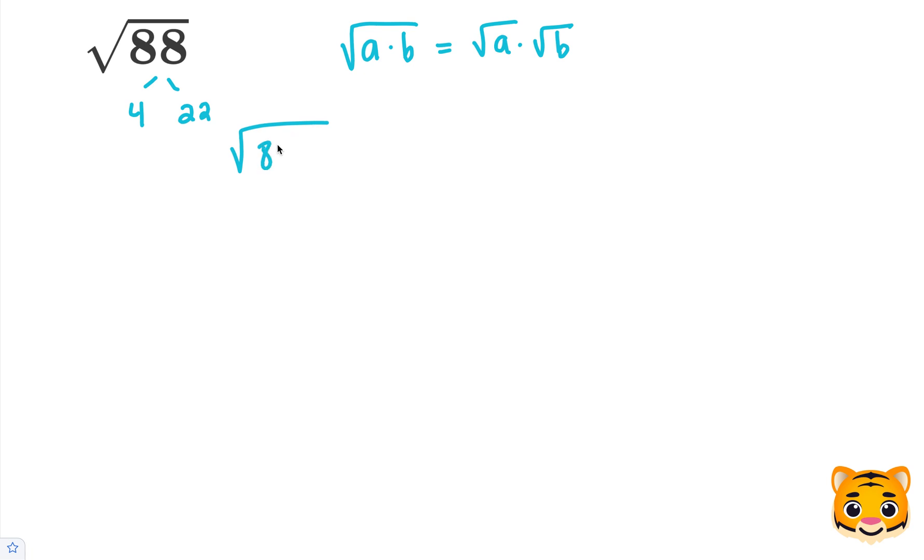Now we can rewrite the square root of 88 as the square root of 4 times 22. Then we can use our math rule to rewrite this as the square root of 4 times the square root of 22. The square root of 4 equals 2, since 2 times 2 gives us 4.